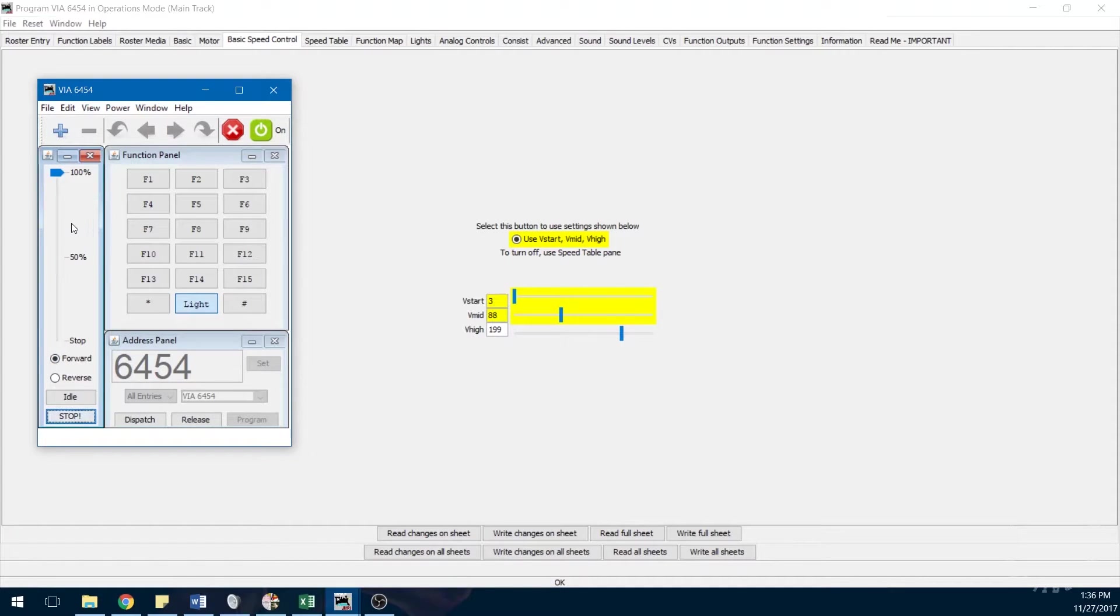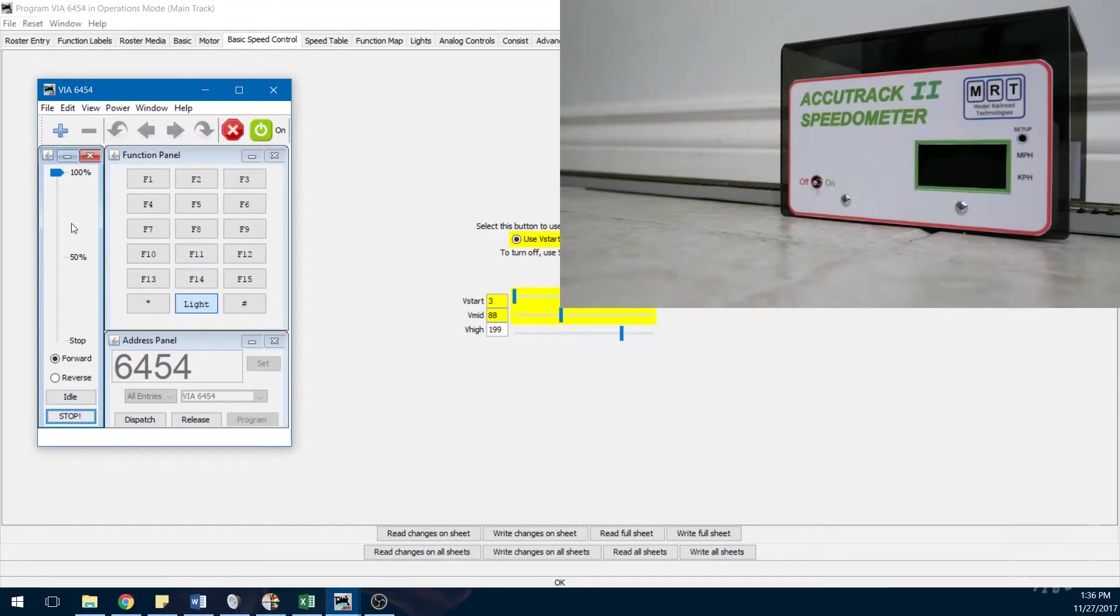As I push the throttle to 100% again, the locomotive now tops out at 50 scale miles per hour. If it does not run the speed that you want it to go, just increase or decrease the value of CV5 in small increments until the top speed matches what you desire.